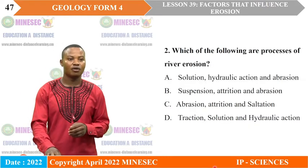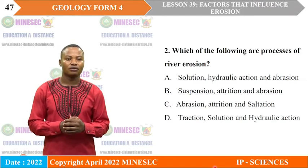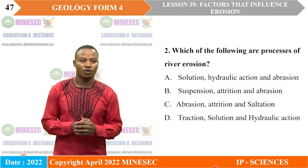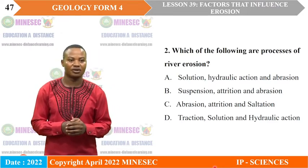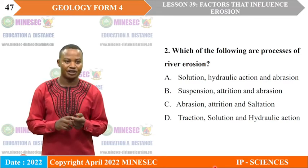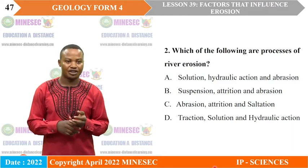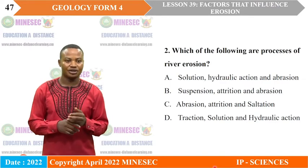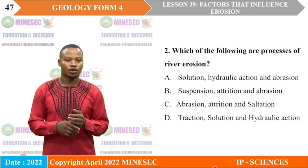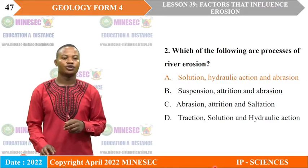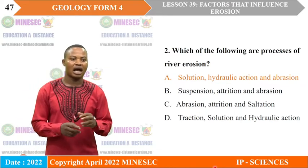Exercise 2: Which of the following are processes of river erosion? A — solution, hydraulic action, and abrasion; B — suspension, attrition, and abrasion; C — abrasion, attrition, and saltation; D — traction, solution, and hydraulic action. The correct answer is A — solution, hydraulic action, and abrasion.